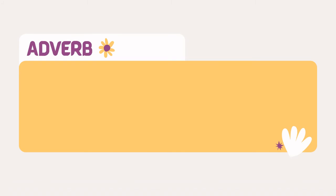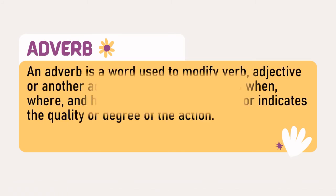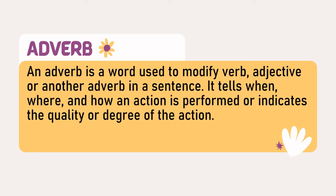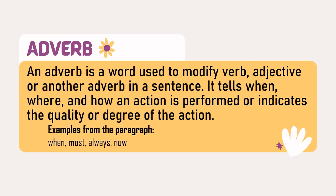For the adverb, an adverb is a word used to modify a verb, adjective, or another adverb in a sentence. It tells when, where, and how an action is performed, or indicates the quality or degree of the action. The examples from the paragraph are: when, most, always, and now.